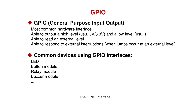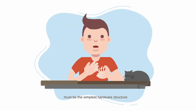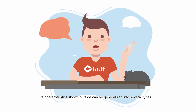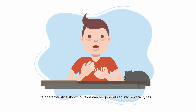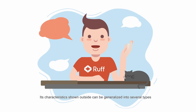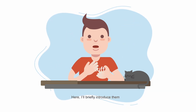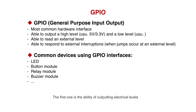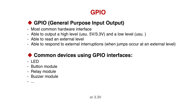The GPIO interface — general purpose input output interface — must be the simplest hardware structure. Its characteristics shown outside can be generalized into several types. The first one is the ability of outputting electrical levels. A level can be a high level, maybe 5 volts or 3.3 volts, or a low level as its output.